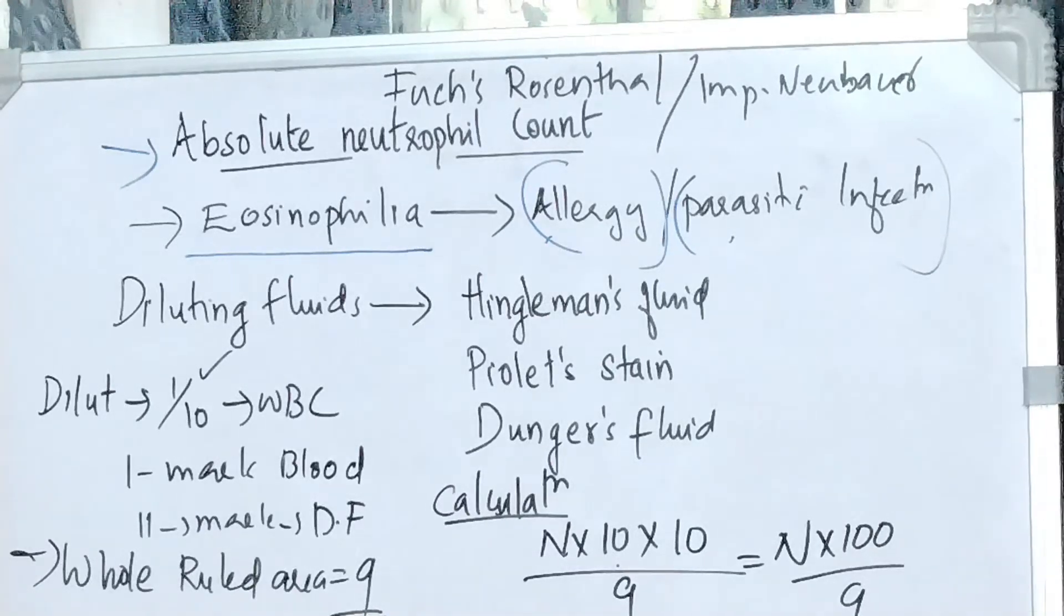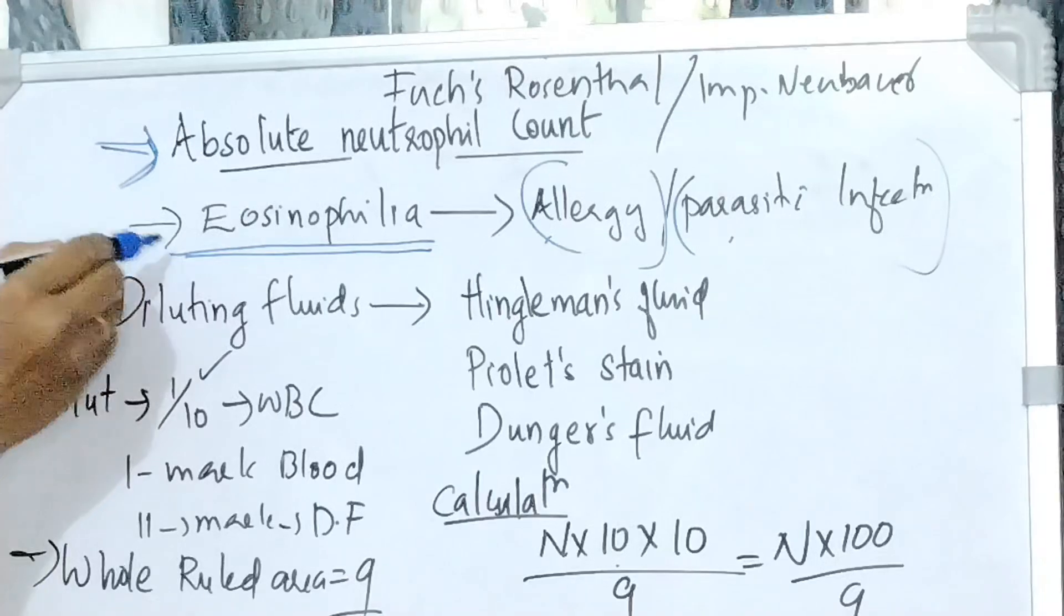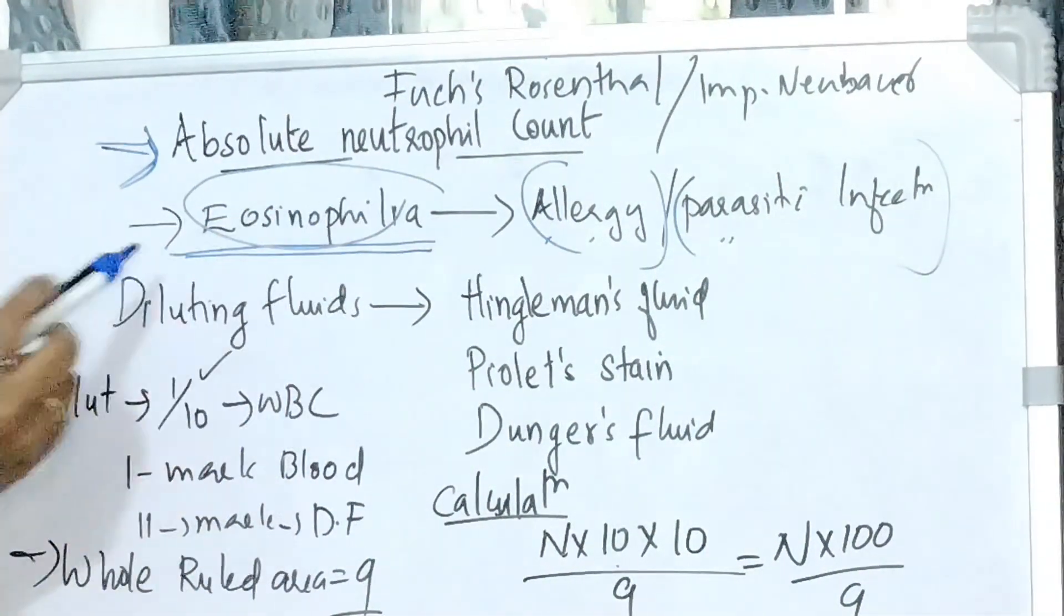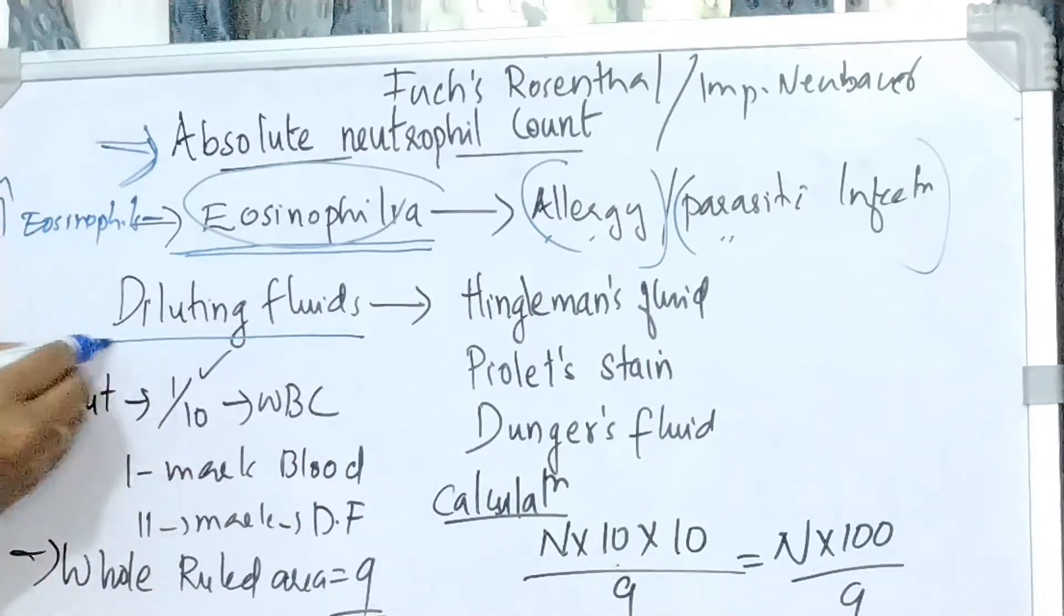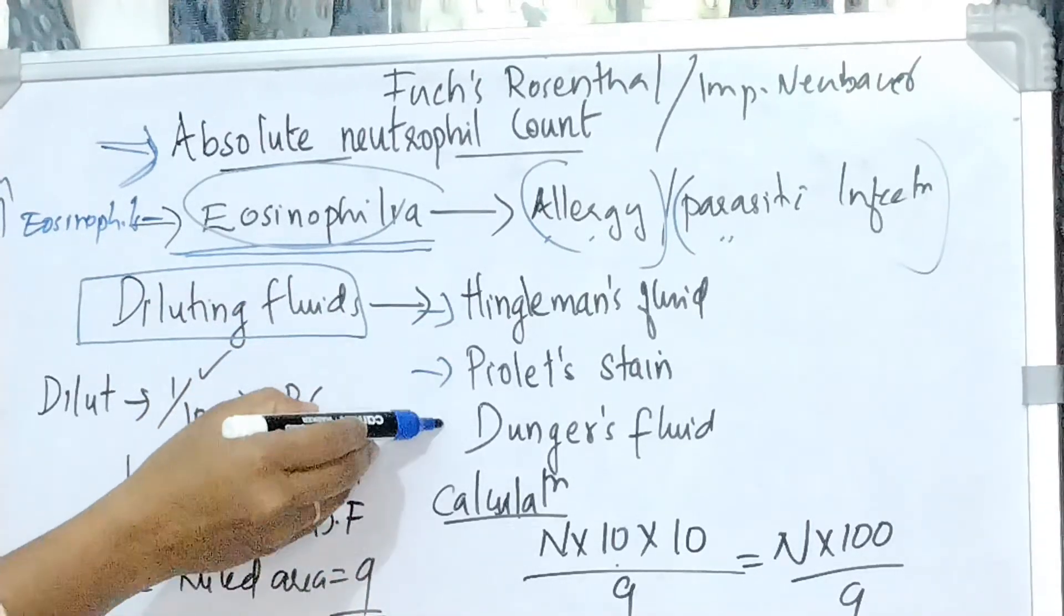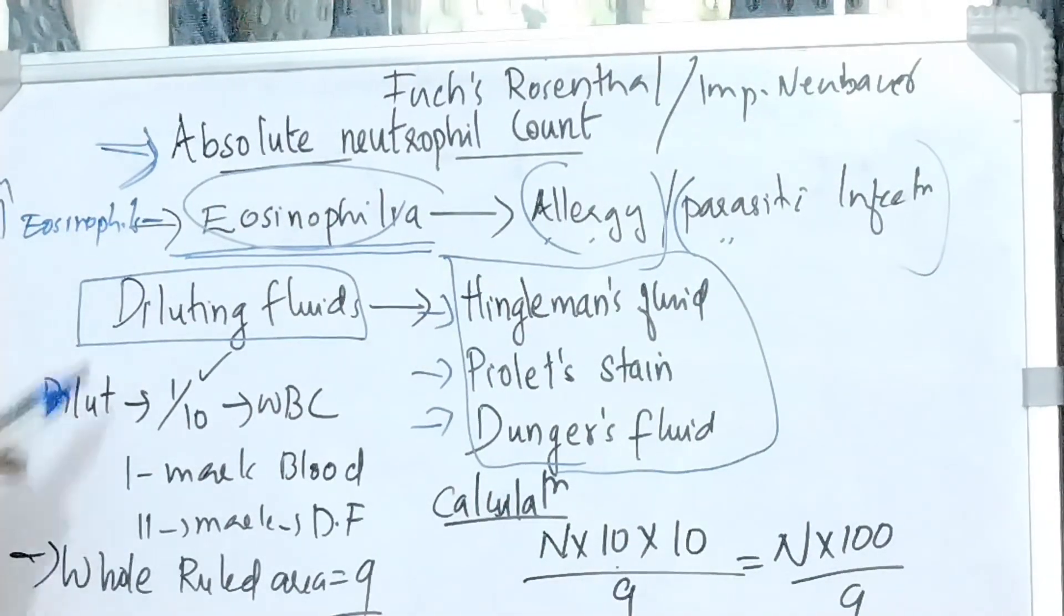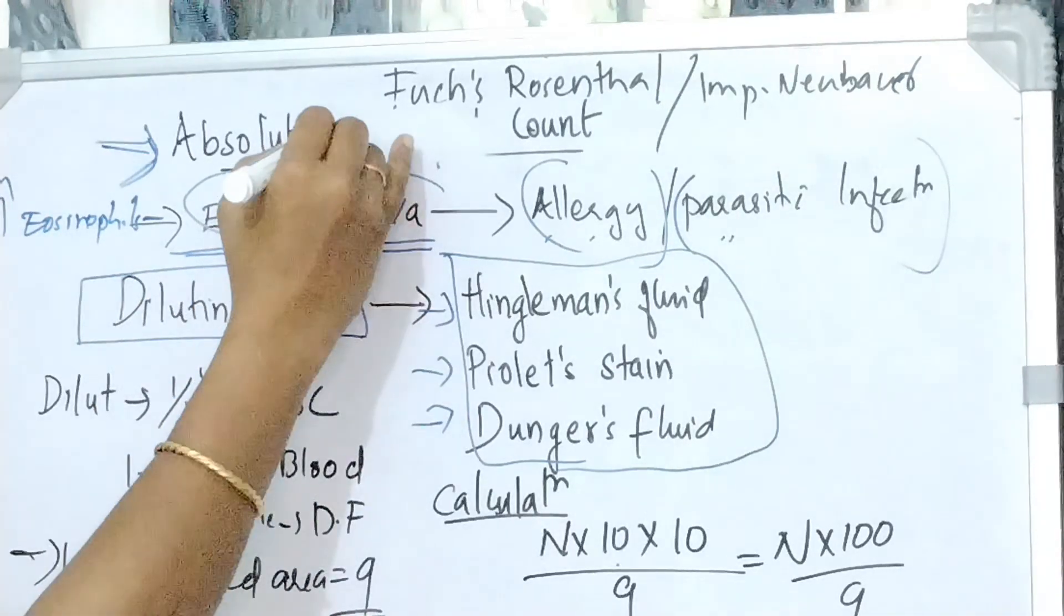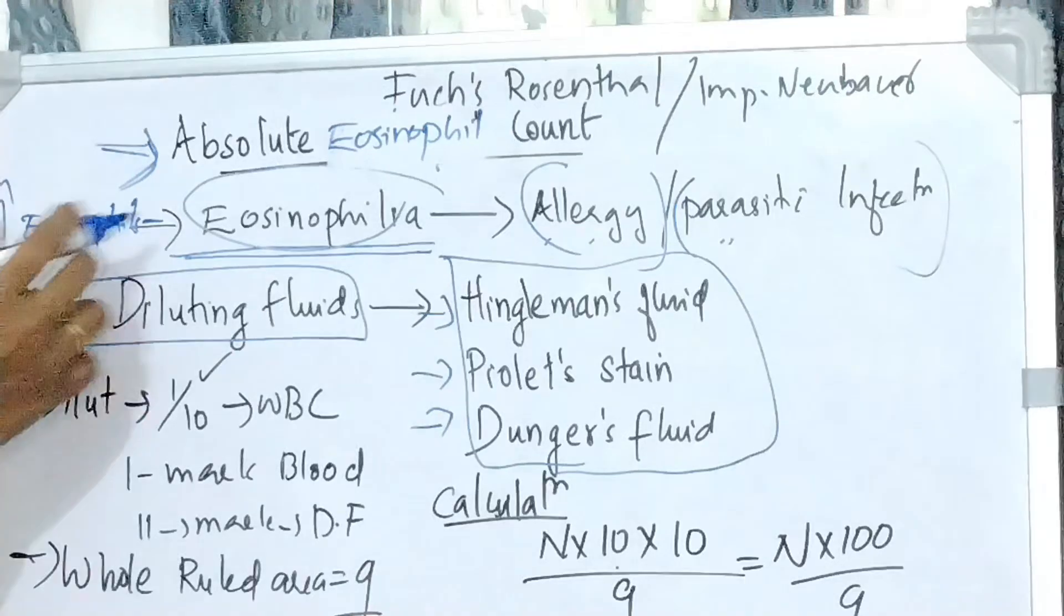Next is about absolute eosinophil count. Sorry, it is not neutrophil count, it is absolute eosinophil count. It is done to confirm the cases of eosinophilia. Eosinophilia is seen in allergy and in parasitic infections. The diluting fluids used for eosinophil count or absolute eosinophil count is Hinkelmann's fluid, Pilot's dye and Dunger's fluid. This is important. Hinkelmann's fluid, Pilot's dye and Dunger's fluid. Absolute eosinophil count. These diluting fluids are used for absolute eosinophil count.